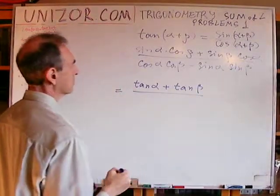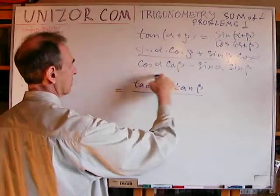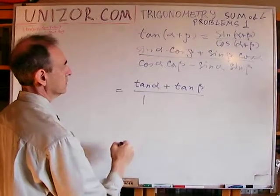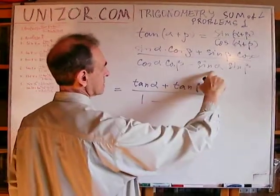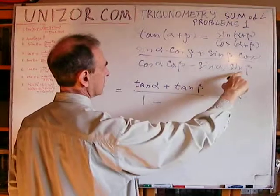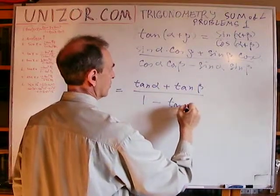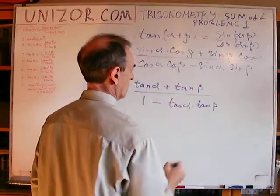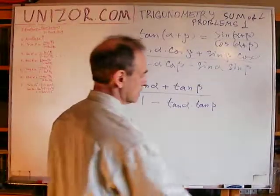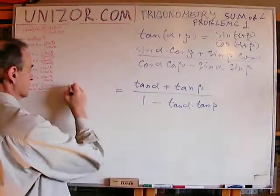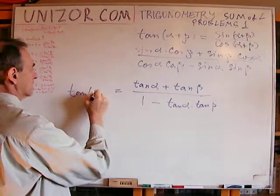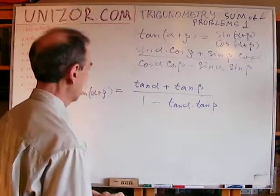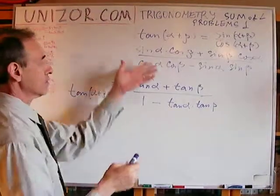In the denominator, dividing by the same product of cosines gives one minus sine over cosine times sine over cosine, which is one minus the product of tangents. That's the formula: tangent of the sum of two angles expressed as tangents of the individual components. The derivation is very simple.